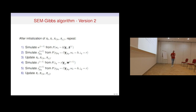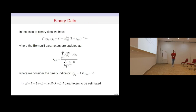We also propose a second version of the algorithm that does not consider the E-step and S-step separately but combines them. So first simulate W and Z, update the parameters, simulate Z considering the previously simulated W value using a collapsed approach, simulate X given W and Z, and then update the parameters again. We start this work considering binary data with a Bernoulli distribution, where the Bernoulli parameters are updated as the proportion of observations falling in latent class L that have value 1 of the binary indicator Y.